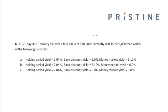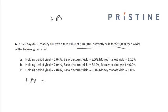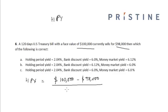A 120-day US Treasury bill with a face value of 1 lakh currently sells for 98,000. We have to calculate the holding period yield (HPY), bank discount yield, and money market yield. The holding period yield HPY is equal to the face value of 1 lakh minus 98,000, divided by the discounted price of 98,000, into 100, which is equal to 2.04%.